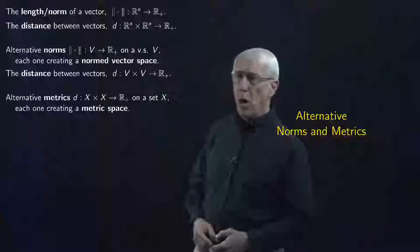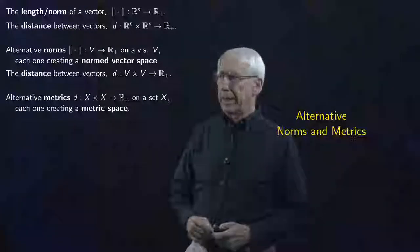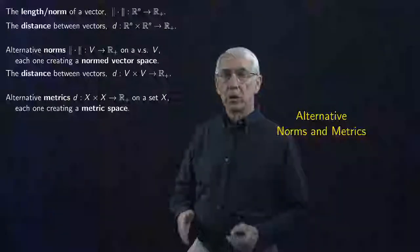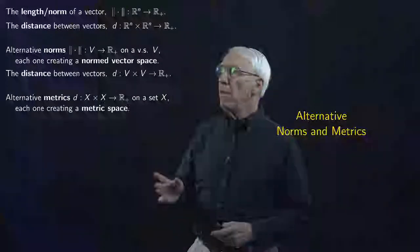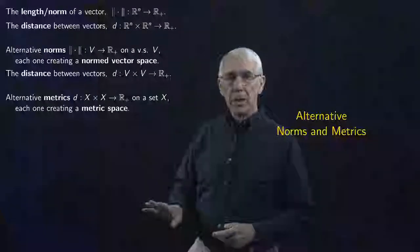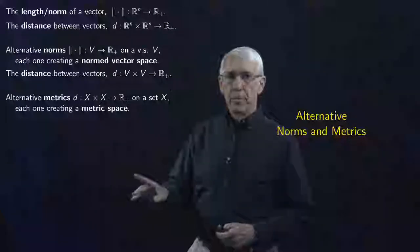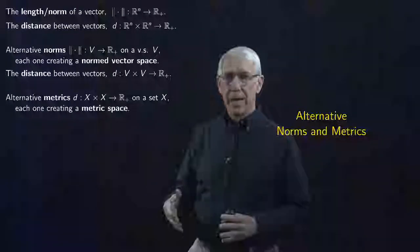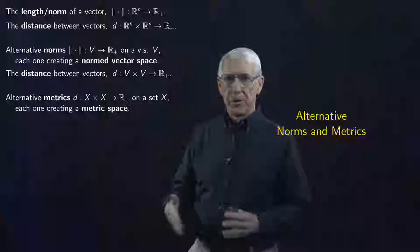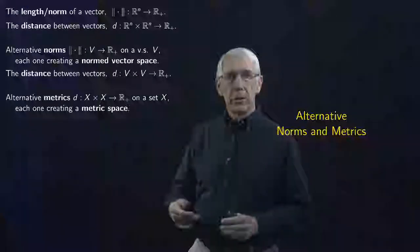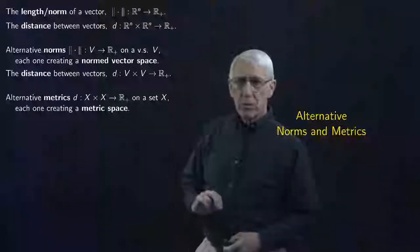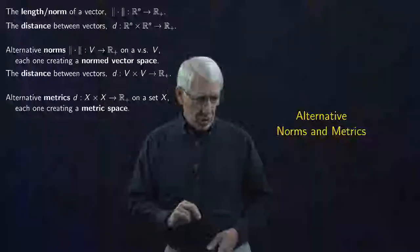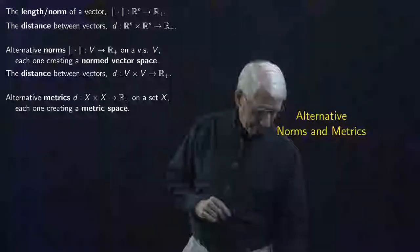Then we'll spend a little time at the end of the lecture talking about alternative metrics — alternative notions of distance that don't come from a norm, where distance is not defined as the norm of the difference between two vectors. So that's where we're going today. Let's get started.